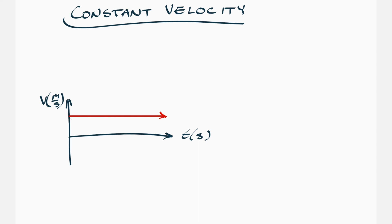Constant velocity just means we have some constant value. An object could have a constant velocity of zero meters per second, which means it's not moving, giving us a flat line on the time axis. That's the obvious case, so we won't focus on it specifically.